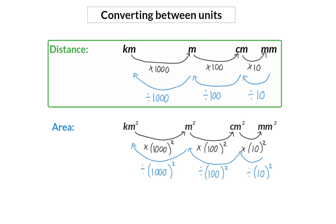You should know that changing from kilometers to meters, you multiply by a thousand; from meters to centimeters, you multiply by a hundred; and centimeters to millimeters, you multiply by ten. All these values still apply, but you divide when you go in the opposite direction.